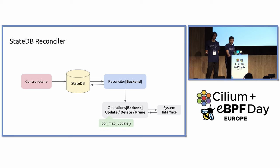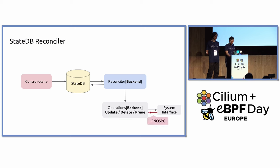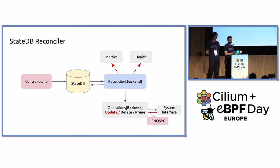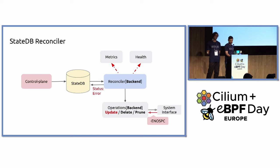An update operation could be simply a BPF map update, and a delete just a map delete — or these could be more complicated multi-step operations or an external call. Now let's look at how failures are handled. If our BPF map update fails — we get an ENOSPC from the system — this would be propagated upwards, the update method would fail, the reconciler would then schedule a retry at a later time, update metrics, and, as we saw in the demo, the error count going up indicates something is failing.